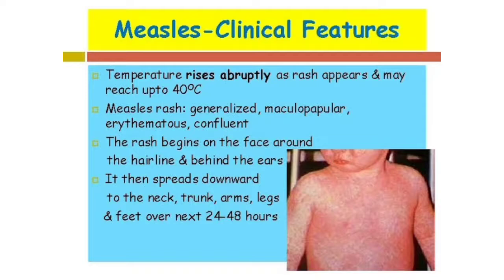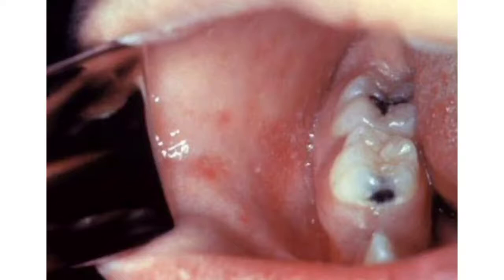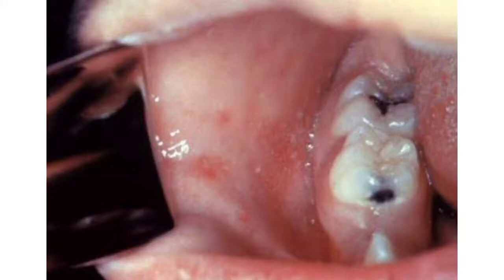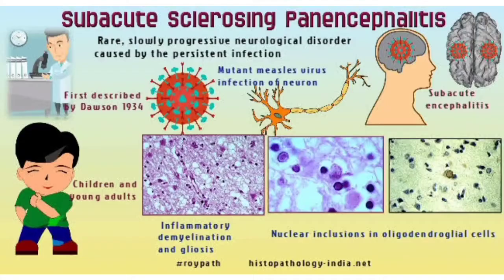The rash develops in the face, starting around the hairline, then goes behind the ears, spreads to the neck, then to the trunk, and finally to the arms, legs, and feet within the next 24 to 48 hours. The Koplik spots — shown in the right-side picture — are found in the mucosa of the mouth and are very important for image-based examination questions.